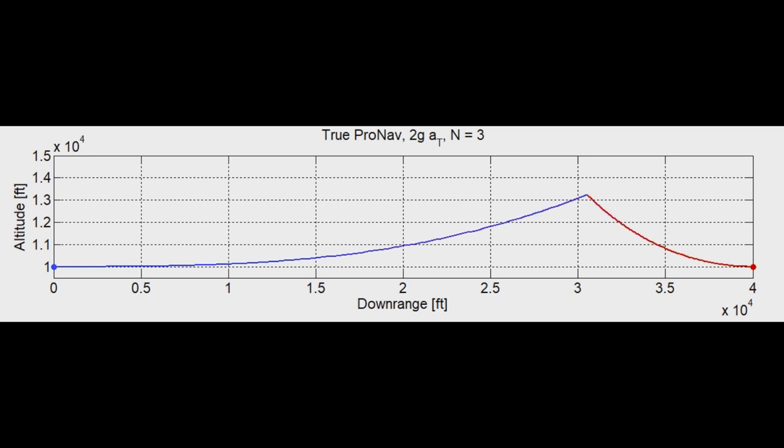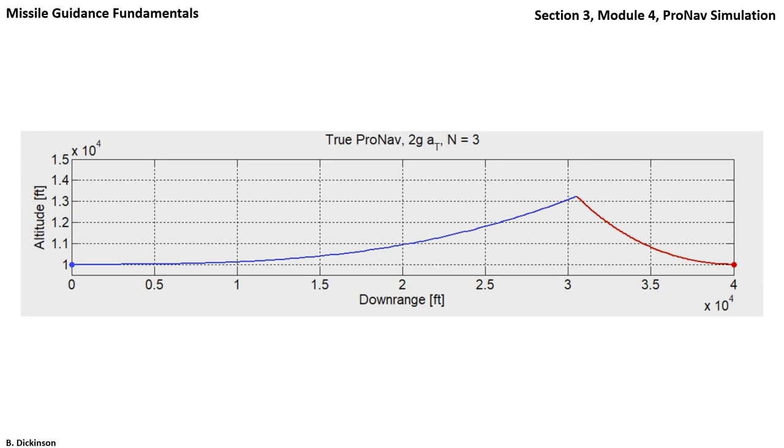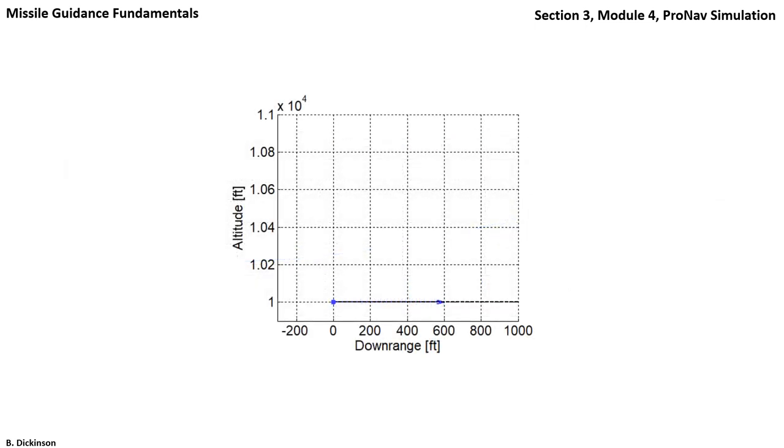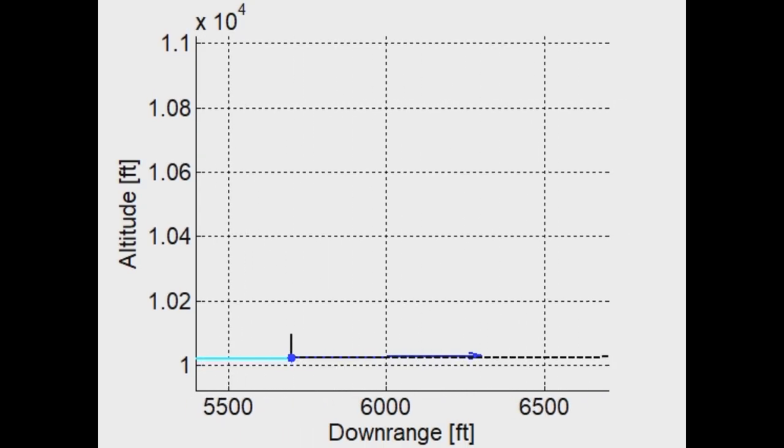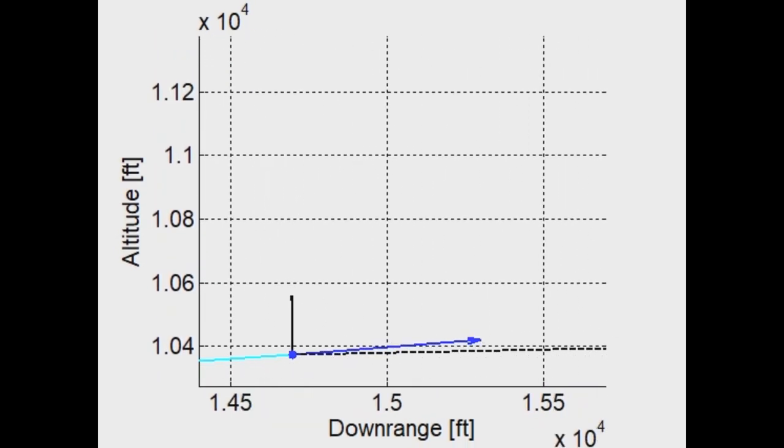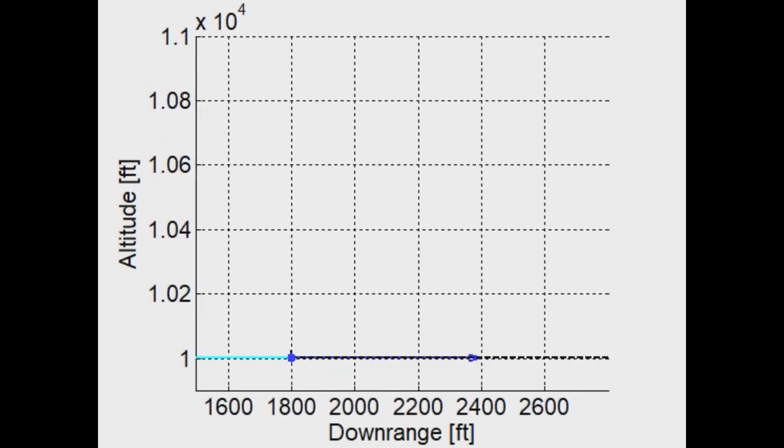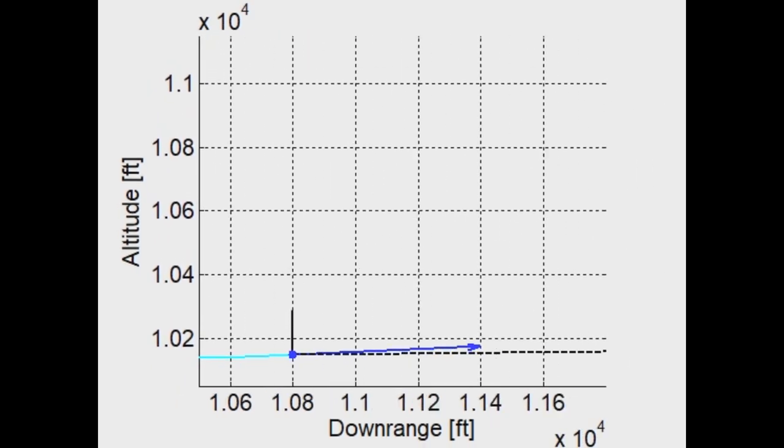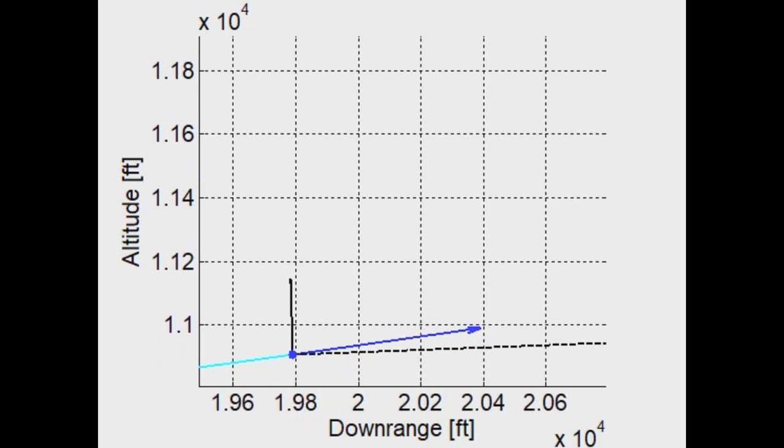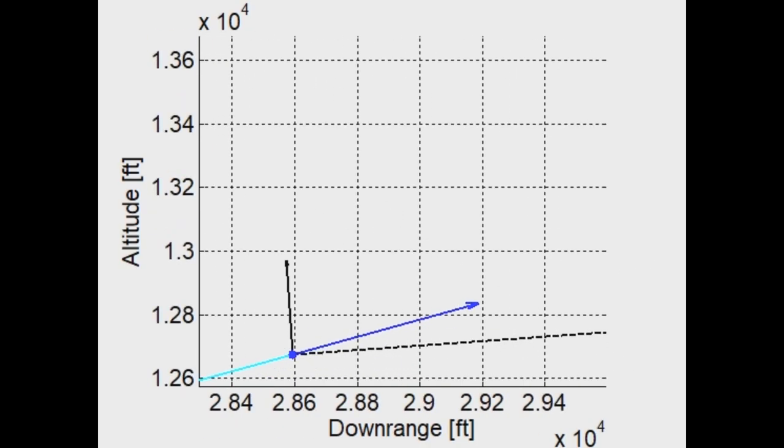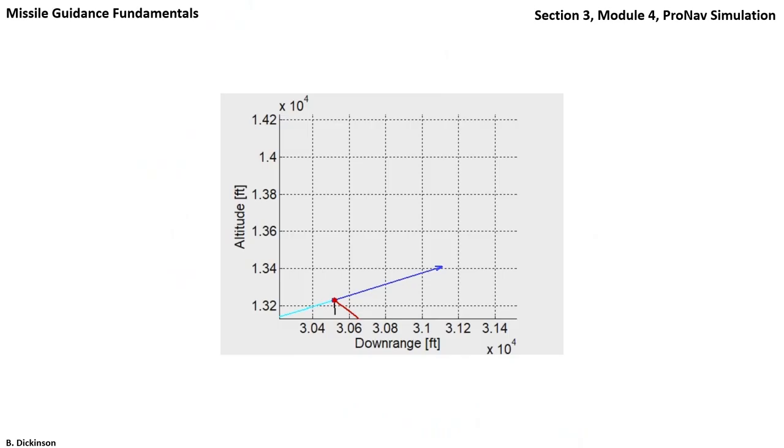Here's the trajectories from the simulation. Notice the pursuer changing its course in an attempt to enforce a collision triangle. Following the pursuer along its trajectory, we see the acceleration command in black, perpendicular to the line of sight direction in the dashed black line, and also the pursuer velocity vector leading increasingly in time as it attempts to establish collision.